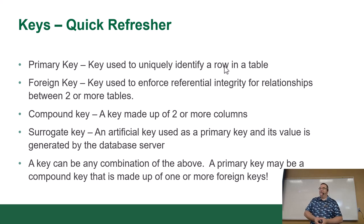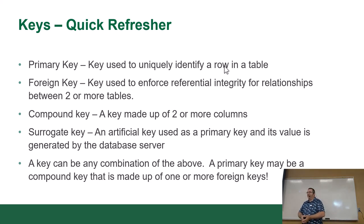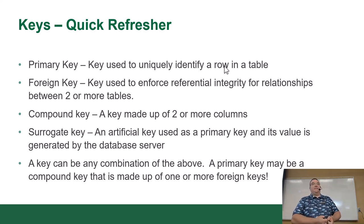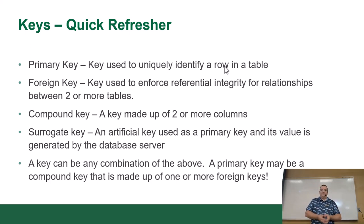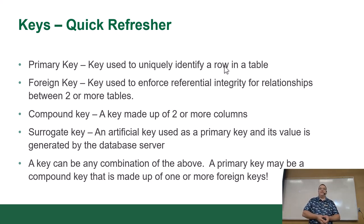Primary key: it's a key used to identify a row in a table uniquely. If you need to find a row, the primary key is what you're going to use to find it. A foreign key is a key in a table that you use to enforce referential integrity between two or more tables. A compound key is a key made up of two or more columns. A surrogate key — some of you may have heard it called a synthetic key.